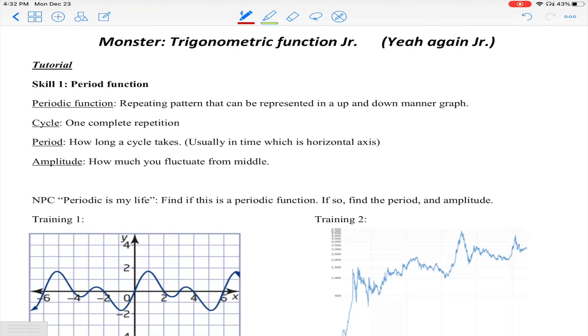The next term that we need to know is something called a cycle - it basically means one complete repetition. Period is how long a cycle takes, usually in real life is in time in the horizontal axis. Amplitude is how much you fluctuate from the middle - if you have a tide that fluctuates up and down, that distance from your middle to the max or min is the amplitude.